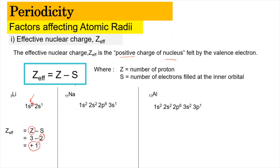Now let's look at sodium, which has proton number 11. When we write out the electronic configuration — 1s², 2s², 2p⁶, 3s¹ — we can calculate Z_eff using Z_eff = Z − S. The proton number is 11, and the number of electrons in the inner orbitals is 2 + 2 + 6 = 10. So Z_eff = 11 − 10 = +1.